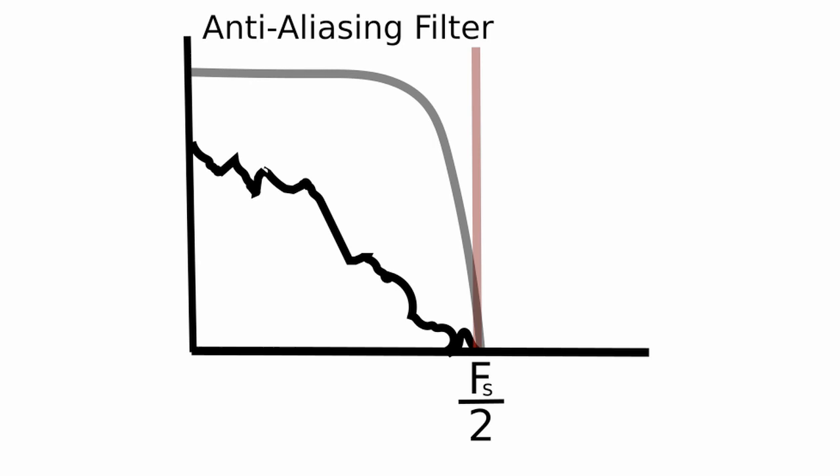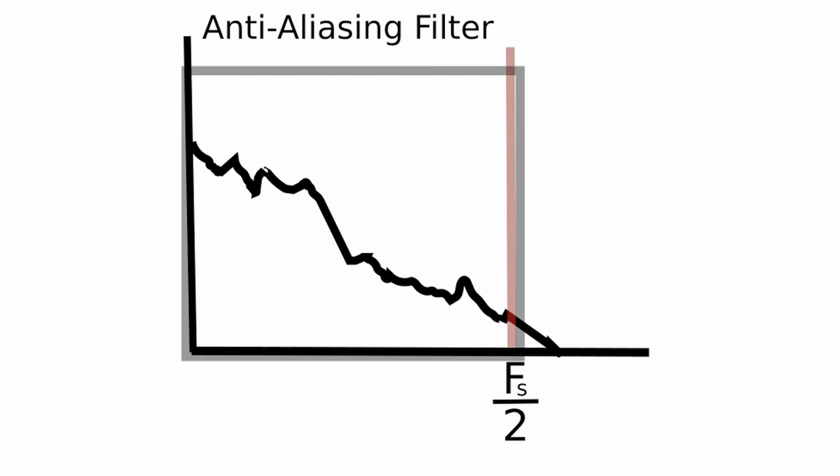In practice, an ideal cutoff filter cannot be realized, leading to attenuation of the higher frequencies. Therefore, we can oversample the signal before filtering, so as not to attenuate any of the desired high-frequency content.